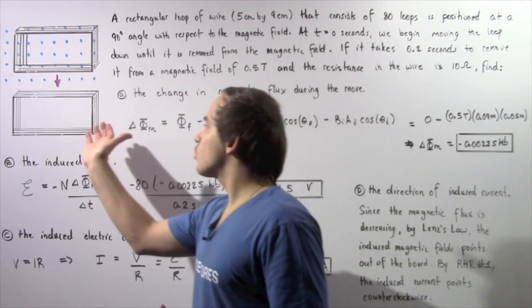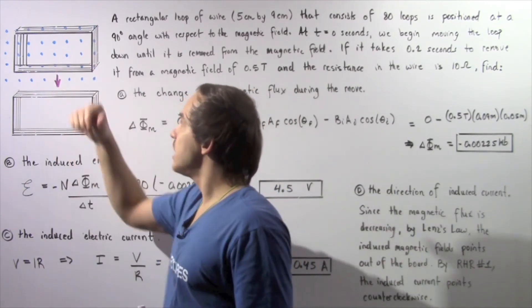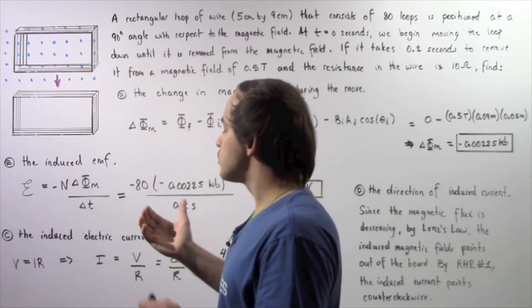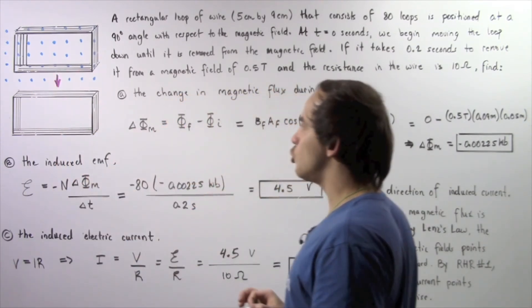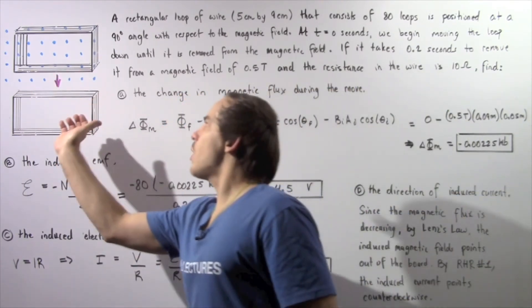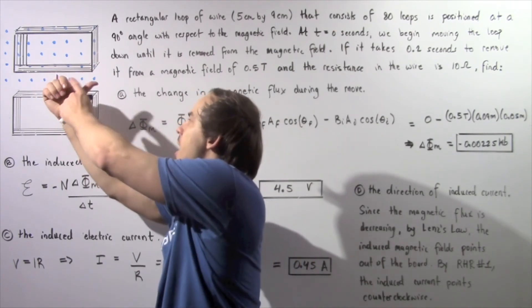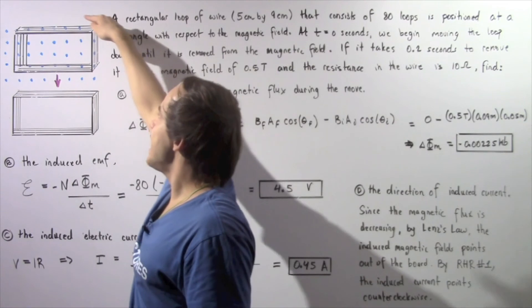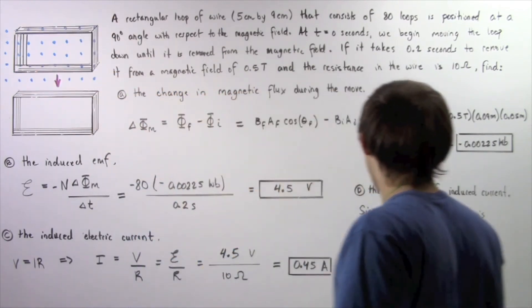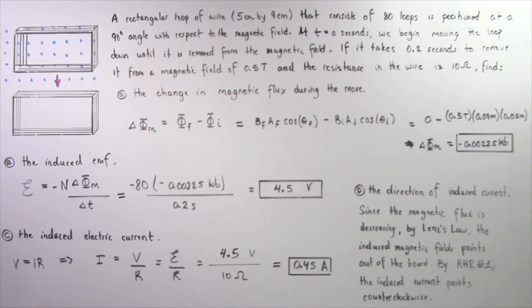Now we apply right hand rule number one. So we wrap our right hand around our loops of wire, so that our fingers point in the same direction as the induced magnetic field. So out of the board, we extend the thumb and the thumb points in this direction. So it points in the counterclockwise direction. So we see by right hand rule number one, the induced electric current points counterclockwise.